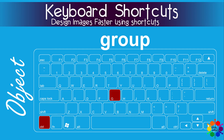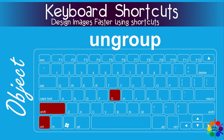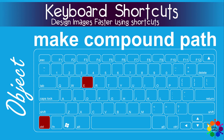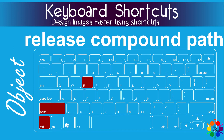The Object menu. Group: Ctrl G. Ungroup: Ctrl Shift G. Make Compound Path: Ctrl E. Release Compound Path: Ctrl Shift E.